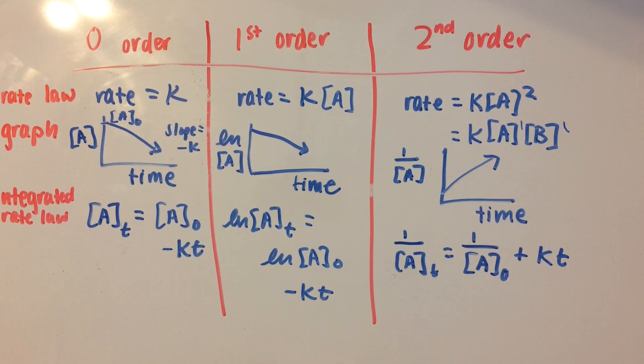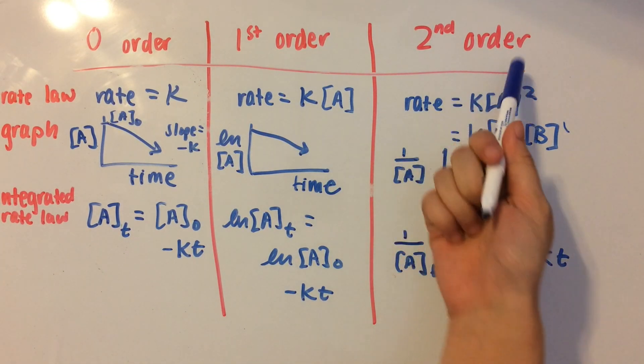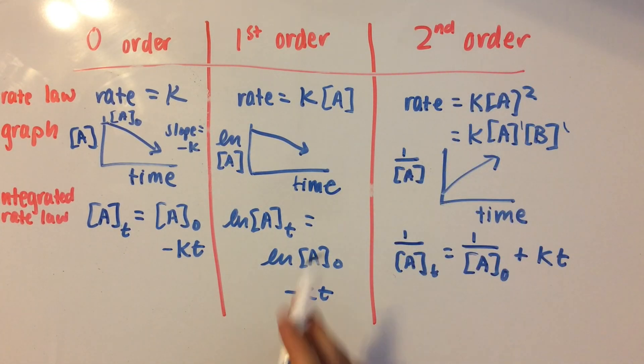So it's actually not that bad to remember. They all have the same basic pattern in their integrated rate law. It's just concentration of A at any specific time equals initial concentration minus kT or plus kT if you're second-order. And then for first and second-order, you can just apply the natural log transformation or the reciprocal transformation onto it.